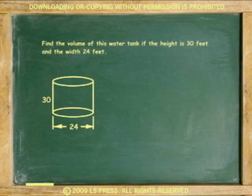Another example, find the volume of this water tank if the height is 30 feet and the width is 24 feet. The volume of the cylinder equals the area of the circle times height or length.